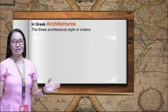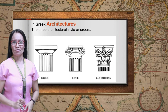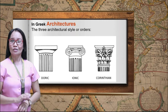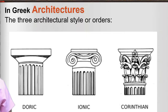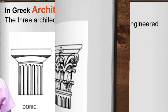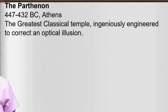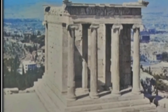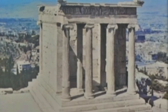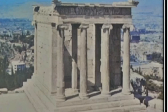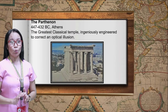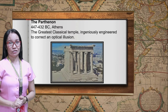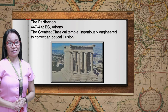In Greek architecture, temples consisted of a central shrine or room surrounded by rows of columns. These buildings were designed in one of three architectural style orders. The Parthenon, the greatest classical temple, was ingeniously engineered to correct optical illusions — the columns were slightly contorted, swollen at the center and leaning inward to correct what would otherwise have been an impression of weakness or excessive heaviness.